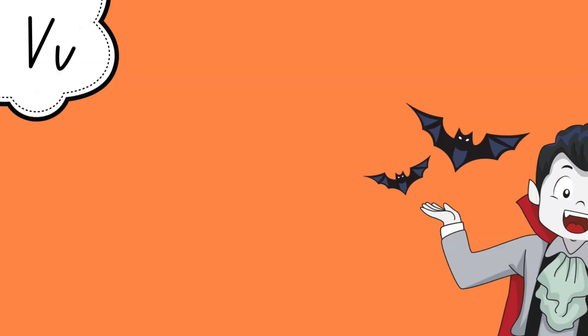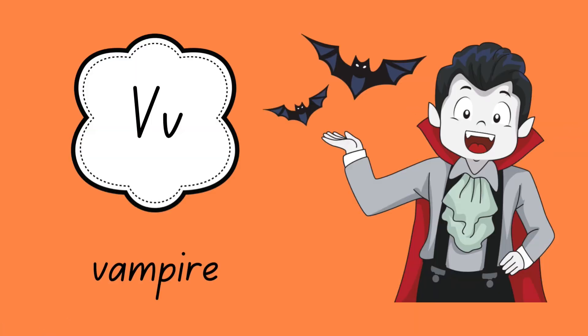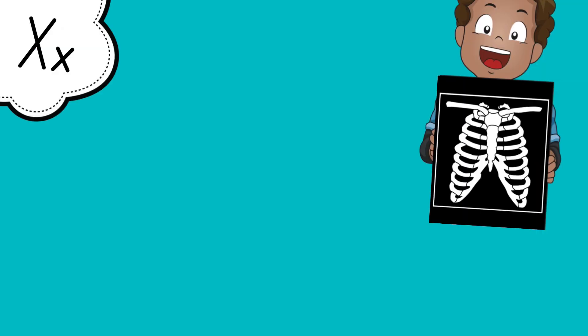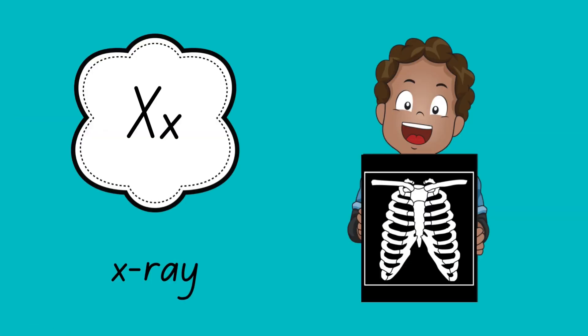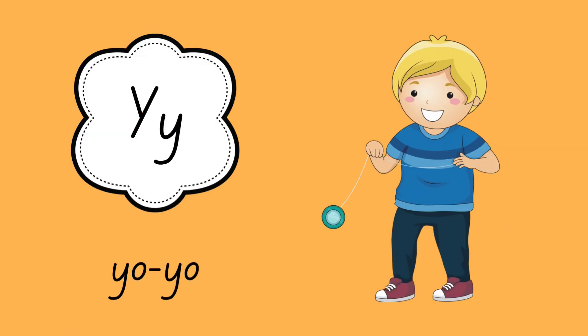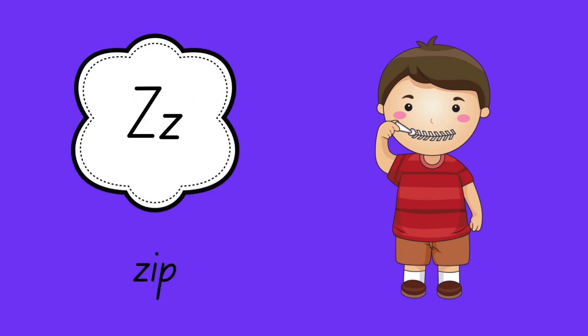V is for vampire. W is for watermelon. X is for x-ray. Y is for yo-yo's. Z is for zip.